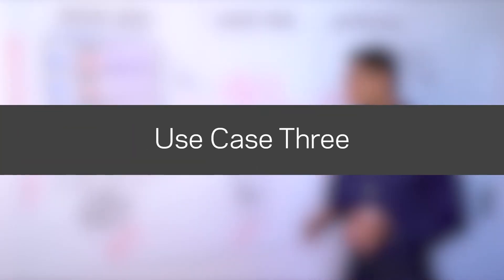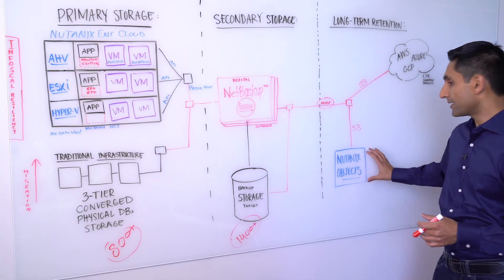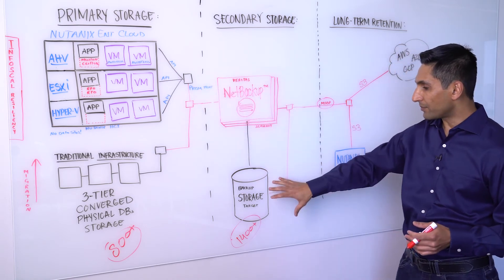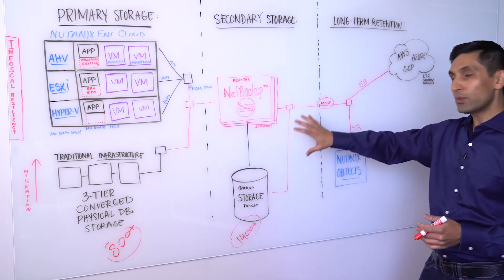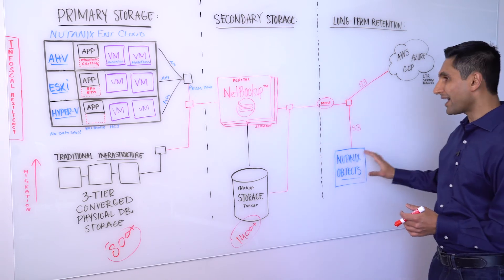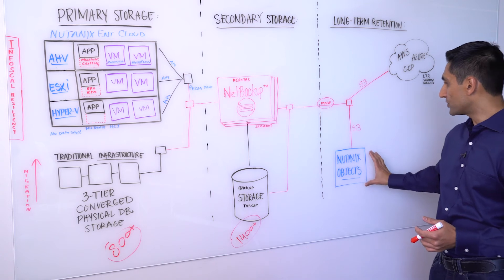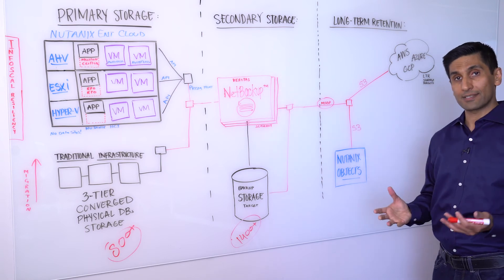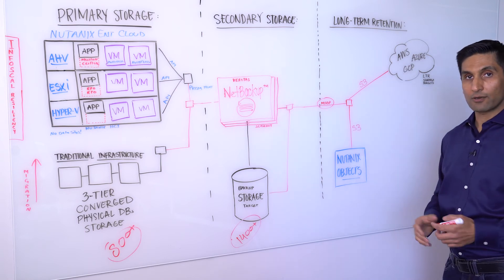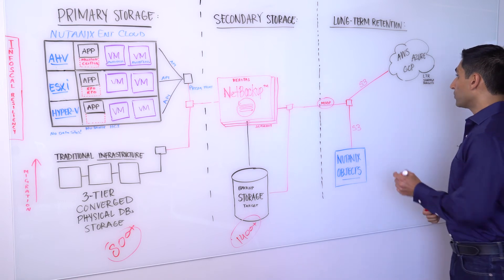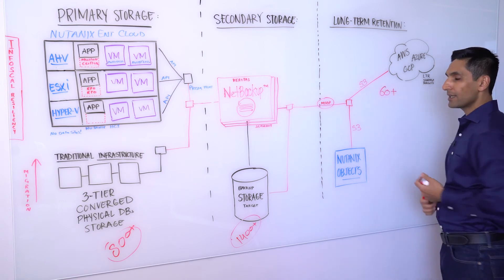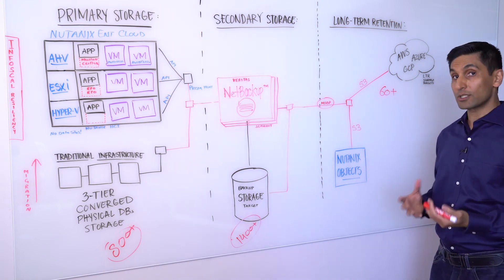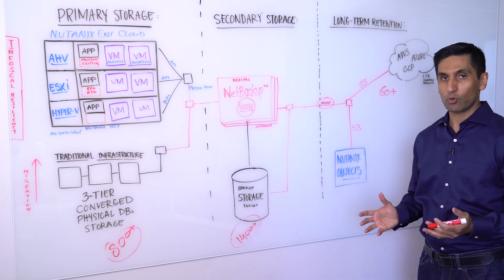For our third use case, we are leveraging our integration with Nutanix objects. So essentially what we're doing is once we protect Nutanix Enterprise Cloud and back it up to the secondary storage, now we can move the data to long-term retention. And for that, essentially what we're doing is we're writing the data to Nutanix object using the S3 interface. Now using the same S3 object, if your customer desires, you can use any one of the cloud service providers for long-term retention. We have support for more than 60 plus cloud service providers. So it's totally up to your customer if they want to use Nutanix object as a long-term retention solution or any one of the public cloud, we support everything.